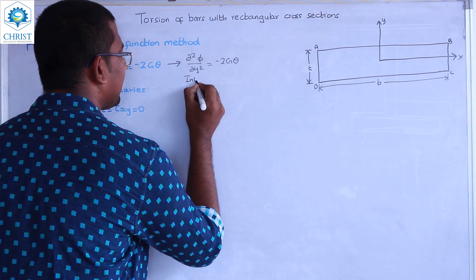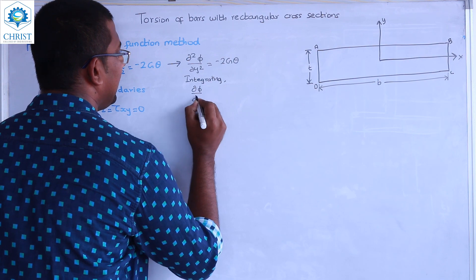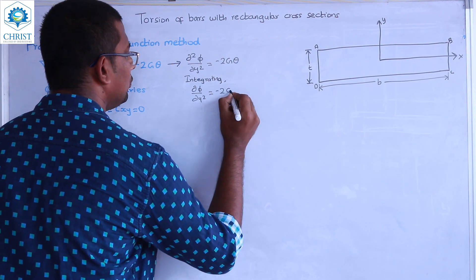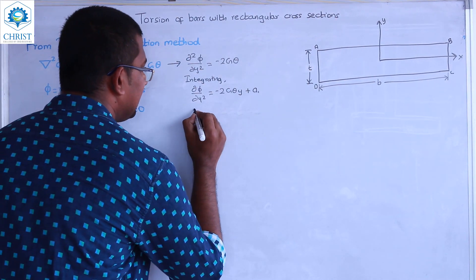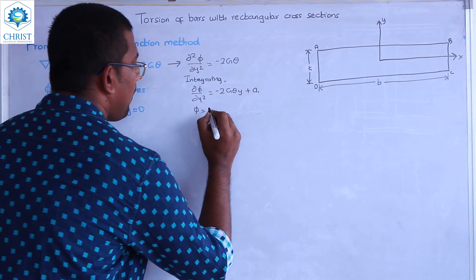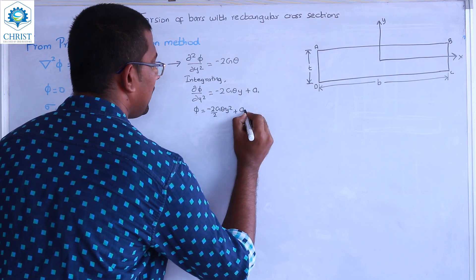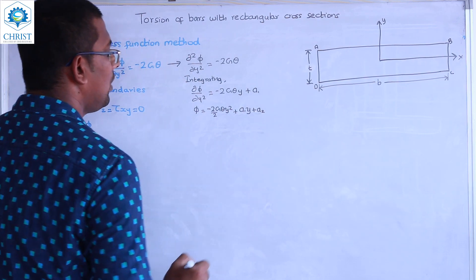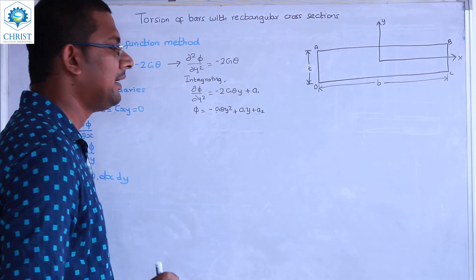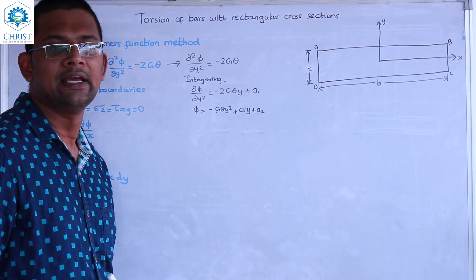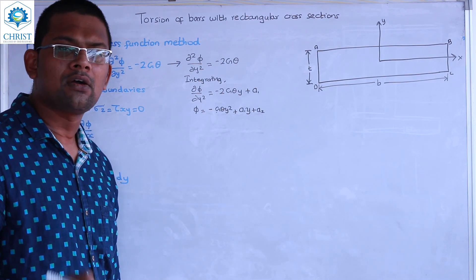Then we integrate. First step: dφ/dy equals minus 2Gθ·y plus a constant. Then integrating again: φ equals minus 2Gθ·y²/2 plus A1·y plus A2, which simplifies to φ equals minus Gθ·y² plus A1·y plus A2. So we have two constants of integration, A1 and A2.